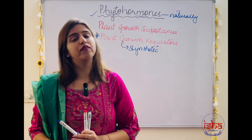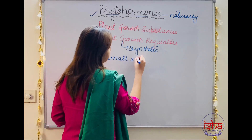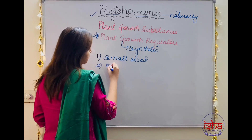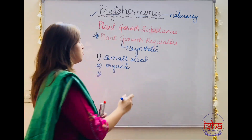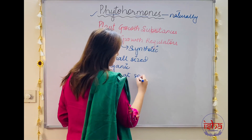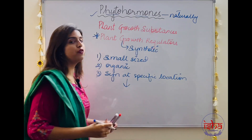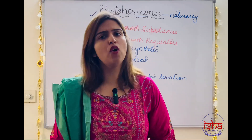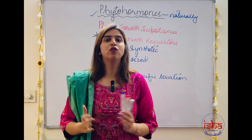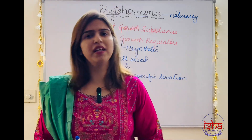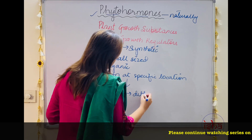What are the features of phytohormones? Number one, they are small-sized molecules. Second, they are organic compounds. Also, they are synthesized in the plant body at a specific location, but they go on to act at a different location from where they are synthesized. An example is auxins: the shoot tip synthesizes auxins, but auxin acts practically all over the plant body — it helps in flowering, fruit formation, and many other functions.